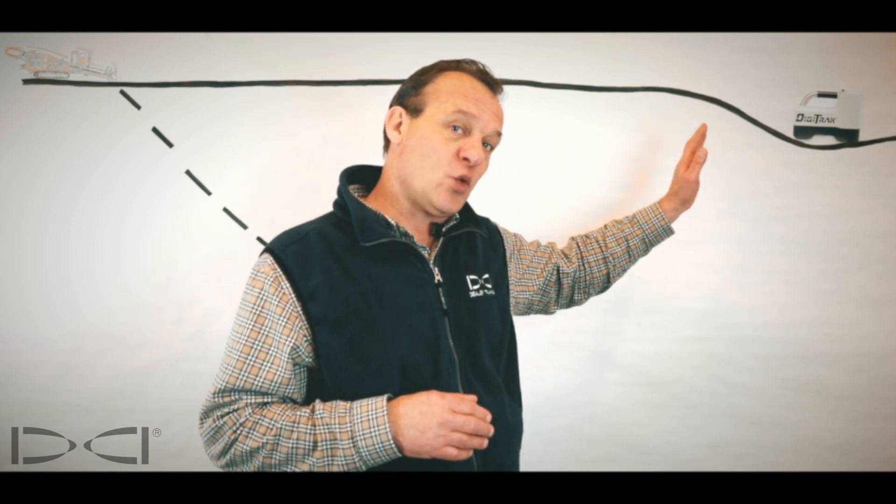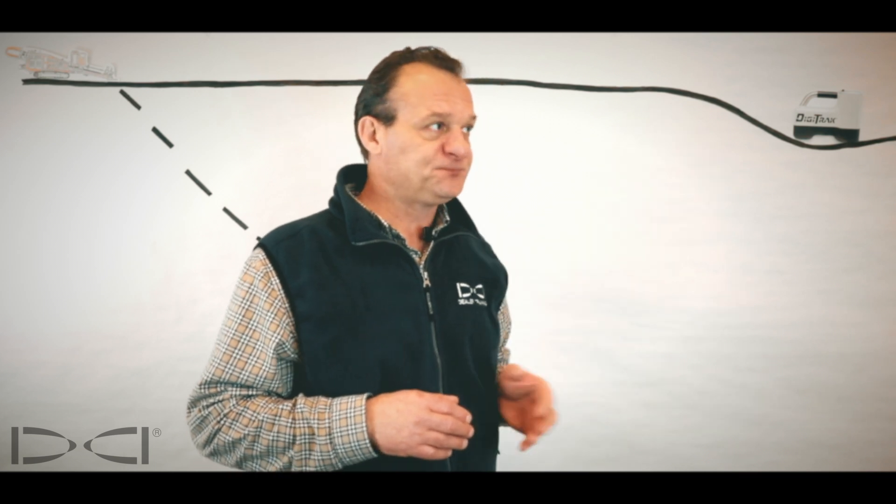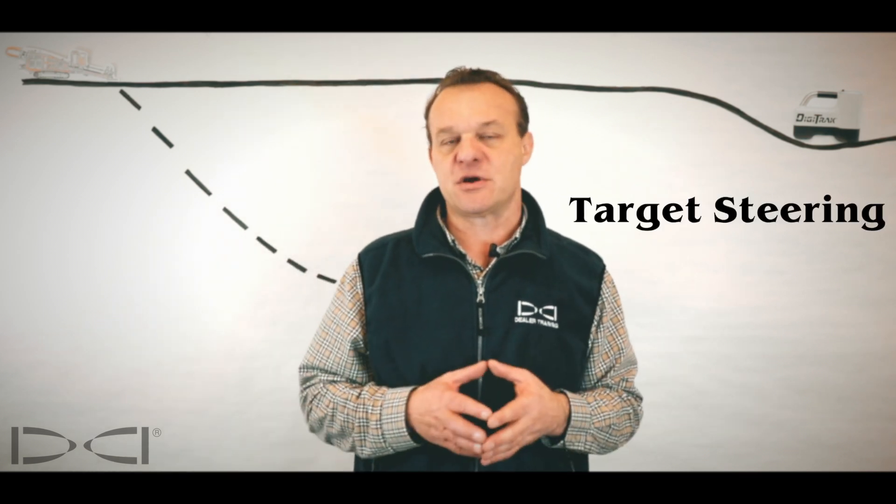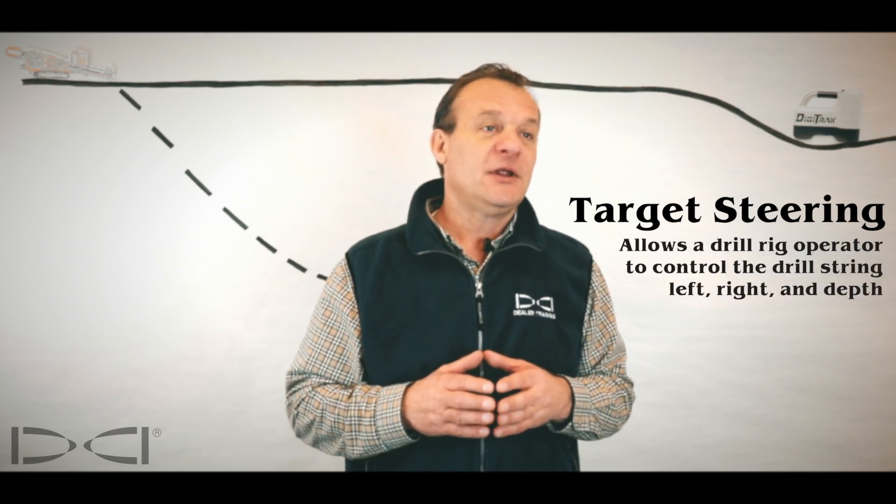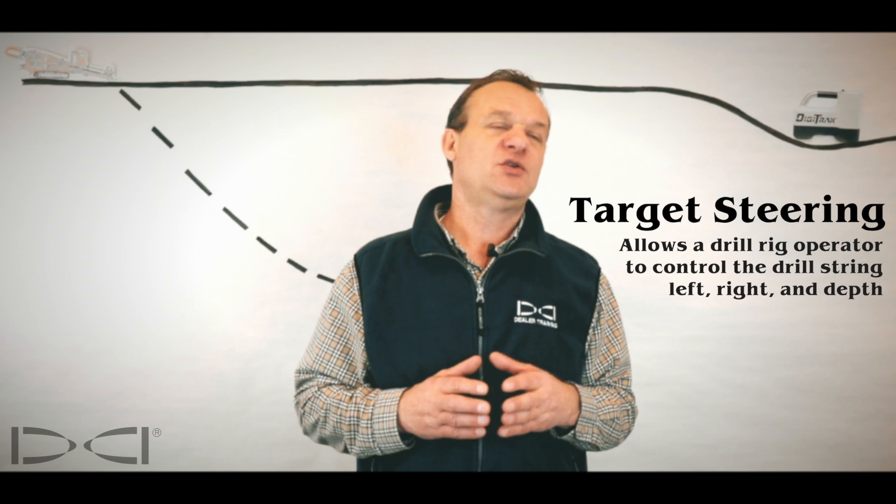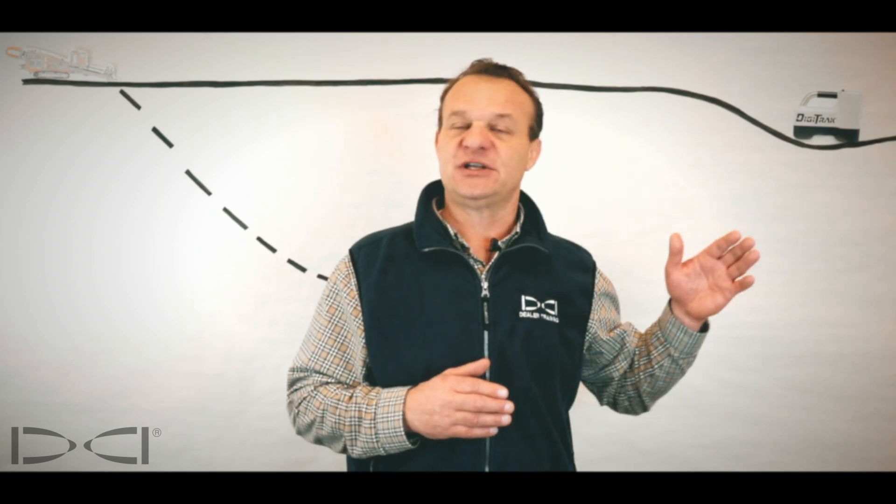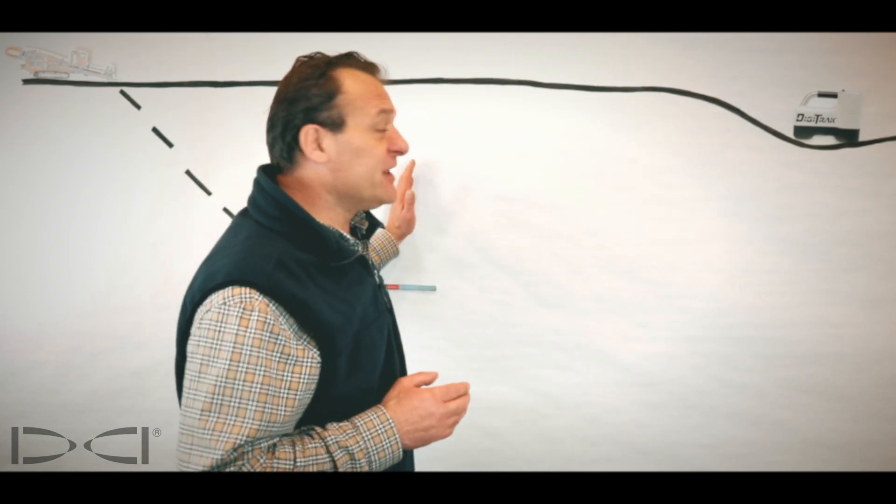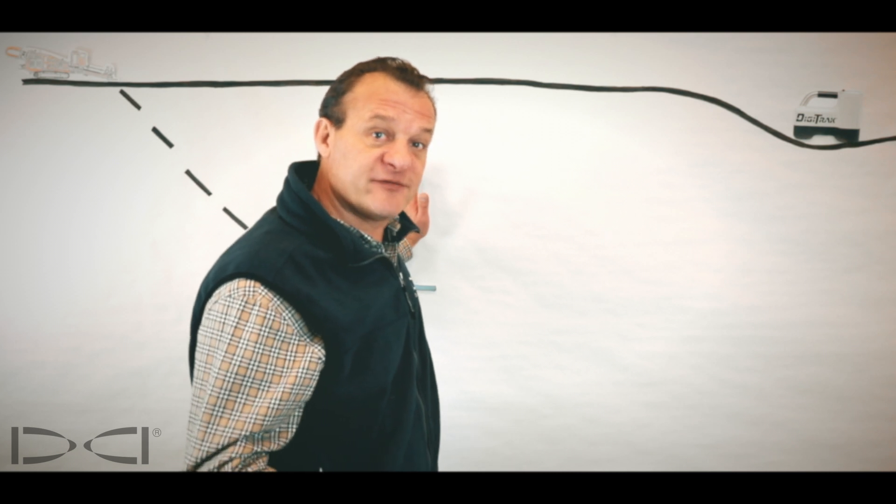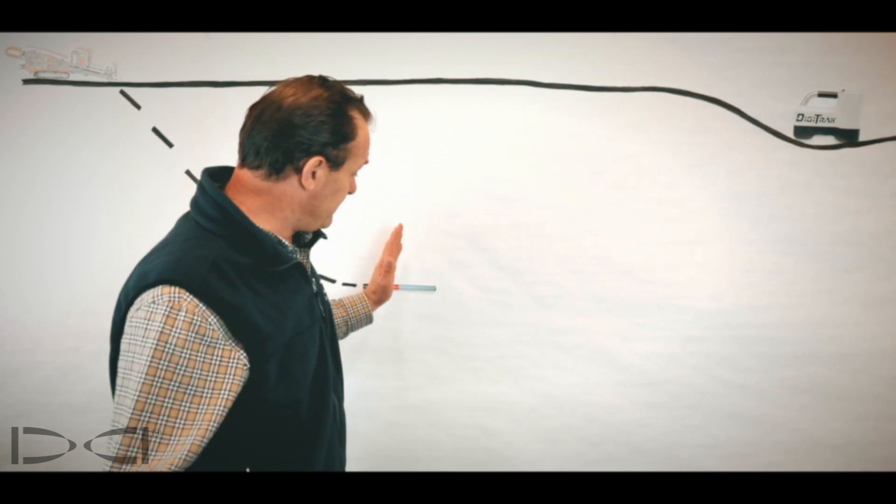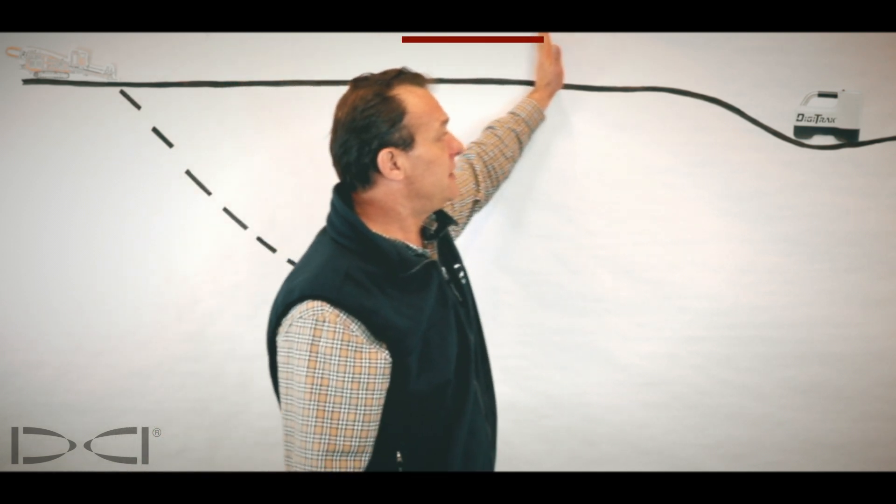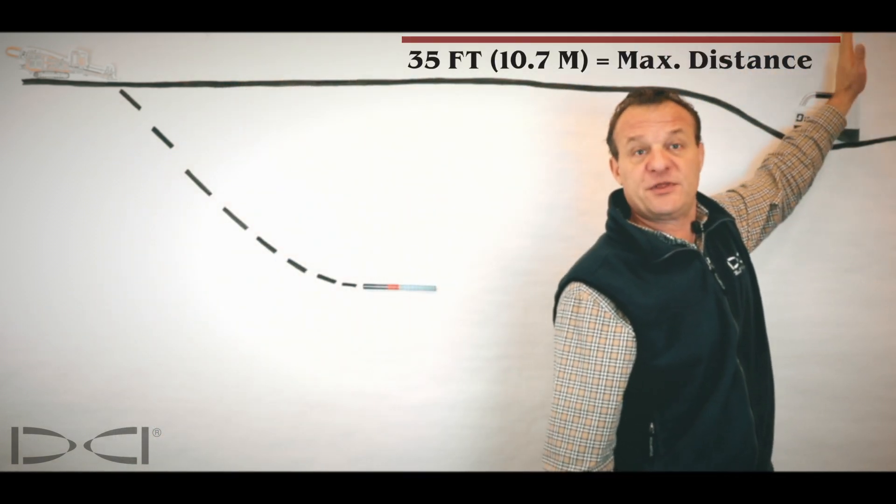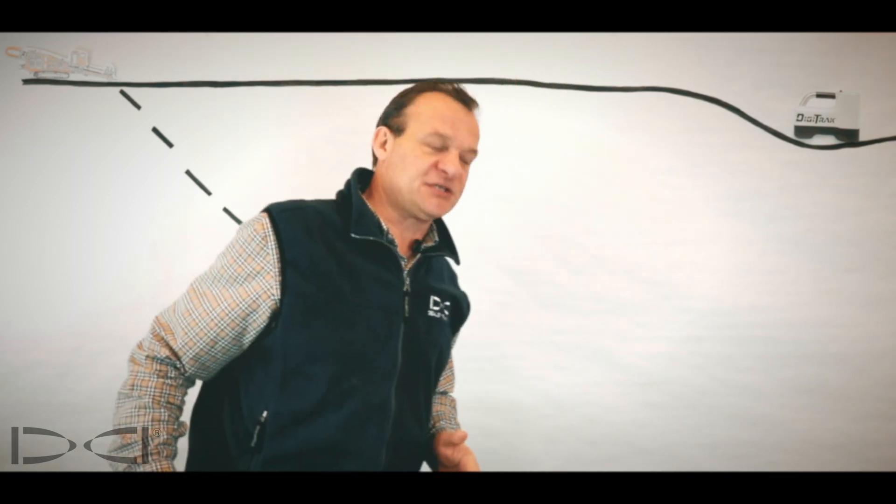Target steering allows you to control left, right and depth, but I can only do that to a much shorter distance. In fact, that distance is capped at 35 feet or 10.7 meters. So that 10.7 meters, 35 feet is from directly above the transmitter to over the receiver. 35 foot maximum distance.